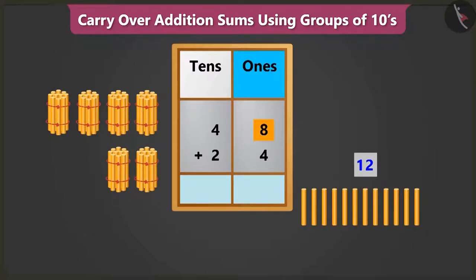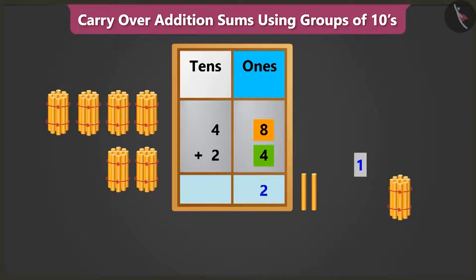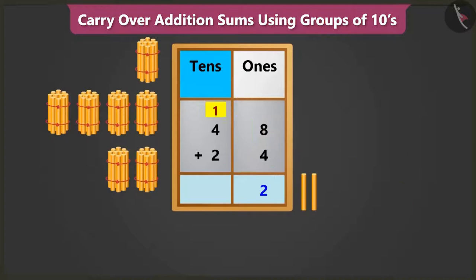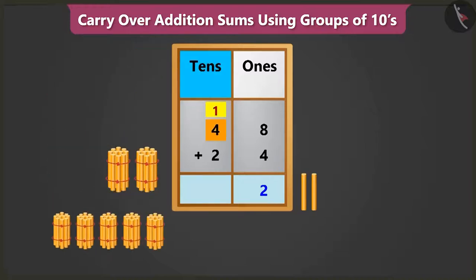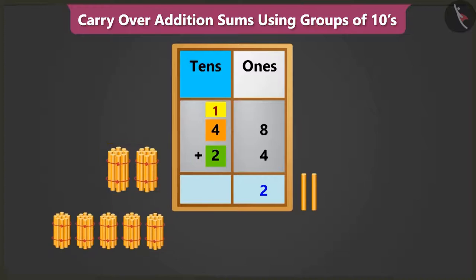Yes, so from 12 ones we will write 2 in the ones box and carry over 1 tens in the tens box. Now when we add 1 and 4 we get 5, and adding 5 and 2 we get 7.